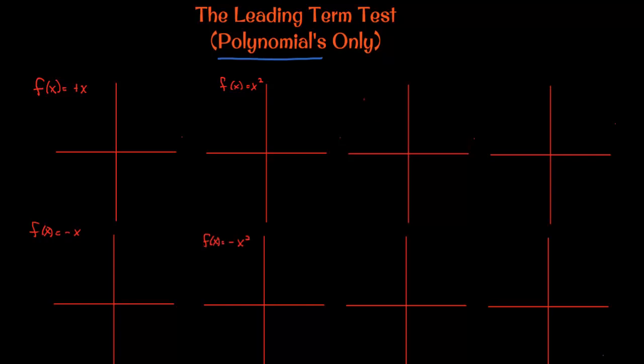In this next portion, I want you to try graphing f(x) = x and then f(x) = -x below it. Over here, let's try f(x) = x², and then f(x) = -x². And over here, we'll try f(x) = x³, and f(x) = -x³.